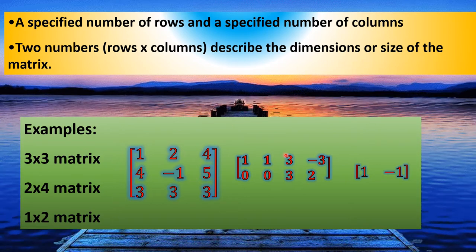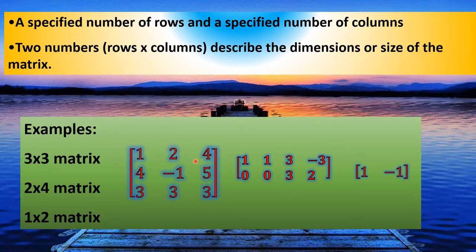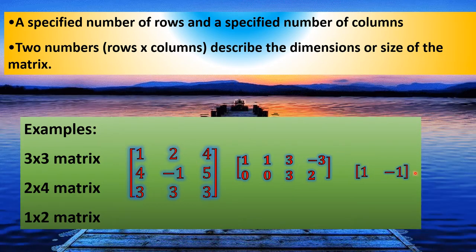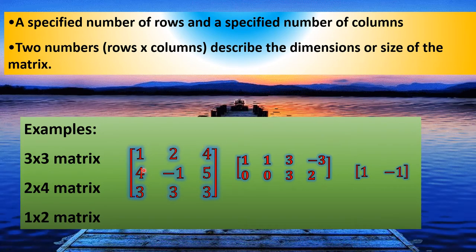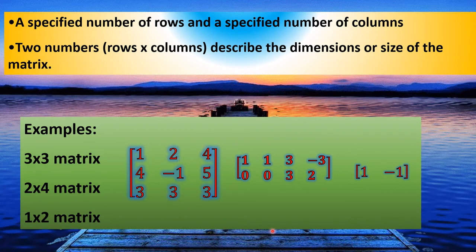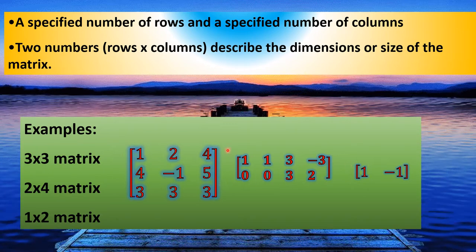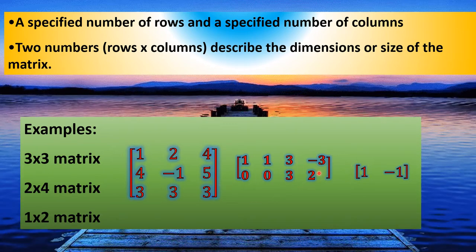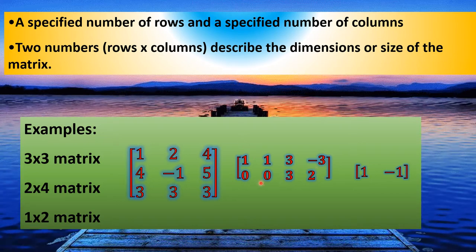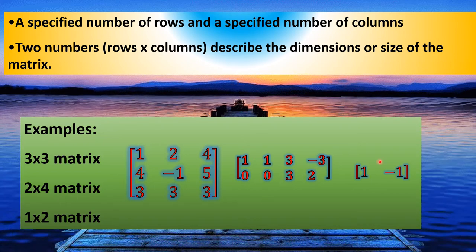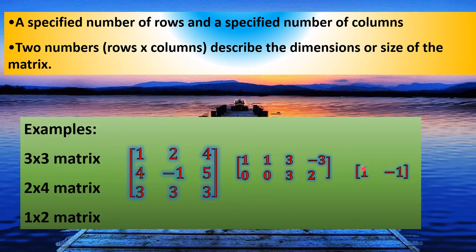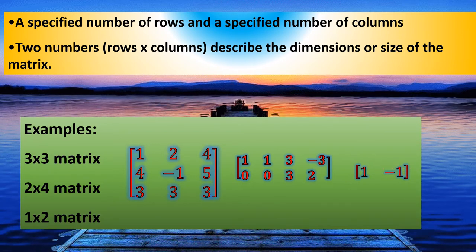Here are 3 examples of matrices. A 2 by 4 matrix has 2 rows and 4 columns. A 1 by 2 matrix has 1 row and 2 columns. A 3 by 3 matrix has 3 columns and 3 rows.